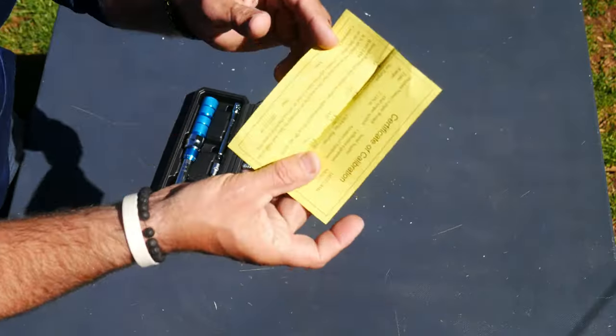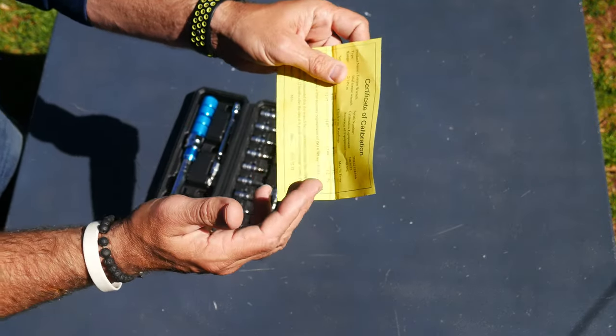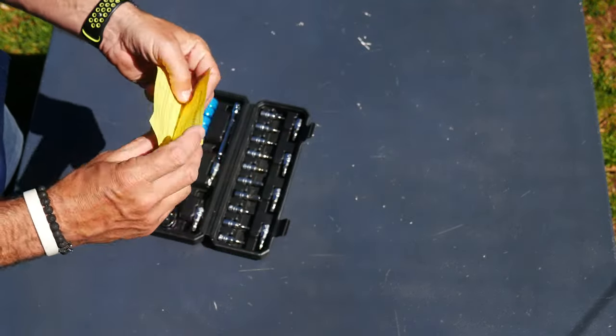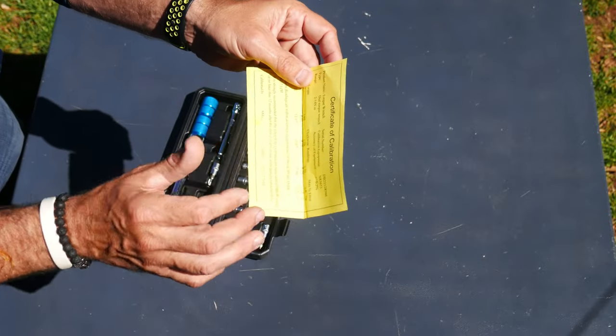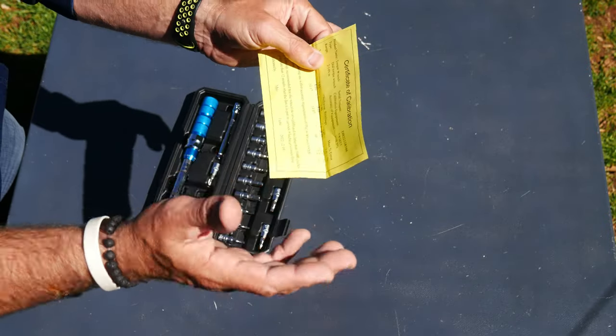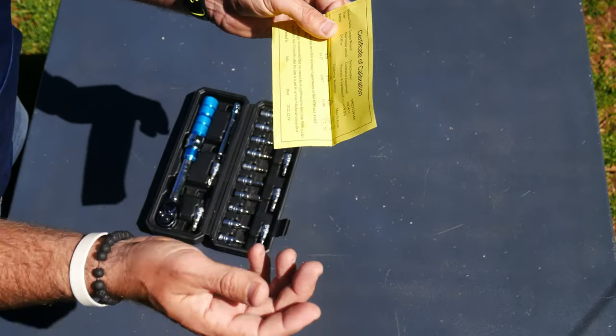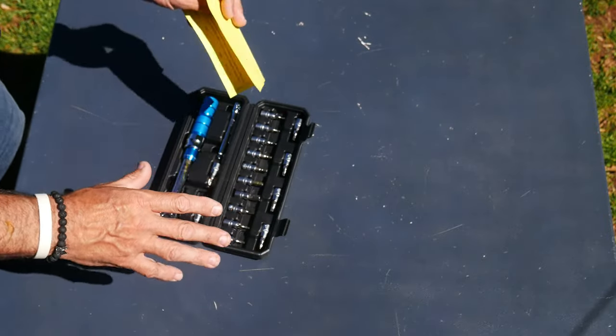Another thing it comes with is a calibration scale. A lot of people don't know that with torque wrenches you need to get them calibrated. This already comes calibrated straight out of the factory. The range is 2 to 14 newton meters. The accuracy is plus or minus 0.05 percent, so that's a really good range - that's an acceptable range on a torque wrench of this caliber.